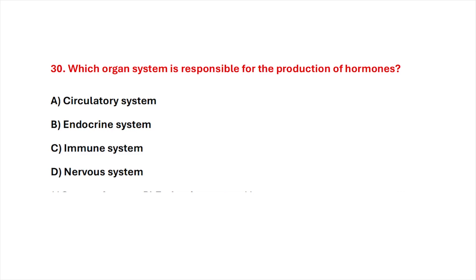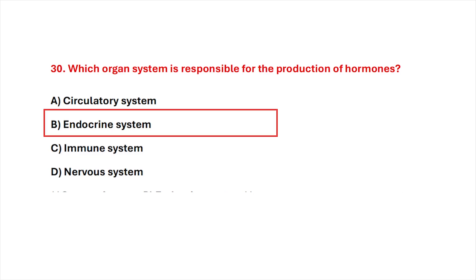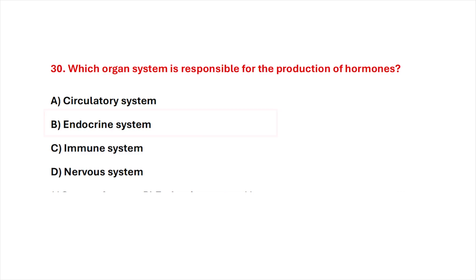Question 30. Which organ system is responsible for the production of hormones? Correct answer is option B, endocrine system.